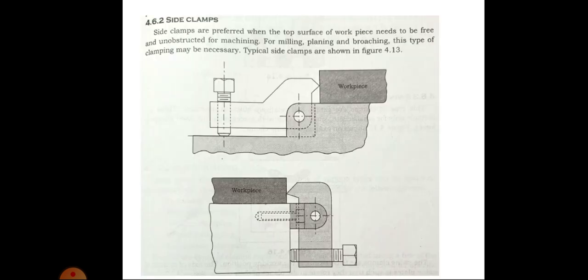Next type is side clamps. Side clamps are preferred when the top surface of the workpiece needed to be free and unobstructed for machining. For milling, planning, and broaching, this type of clamping may be necessary.